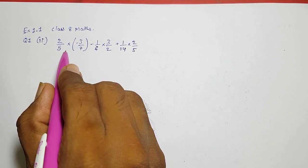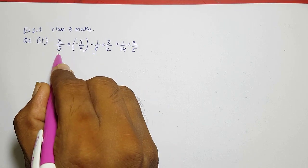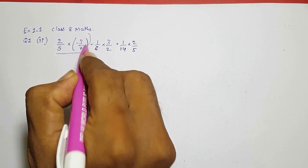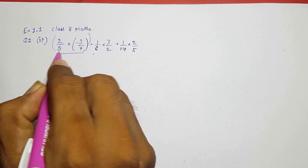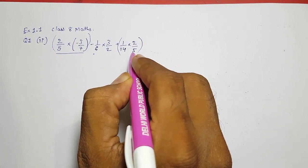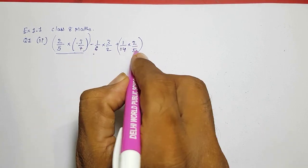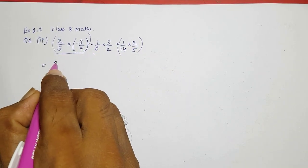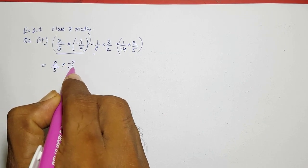You can see 3 by 2 here. In this term multiplication is there between this 2 and 2 by 5, and here also multiplication is there and 2 by 5 is there. So we are going to take this together in front like this: 2 by 5 into minus 3 by 7 plus 1 by 14 into 2 by 5.